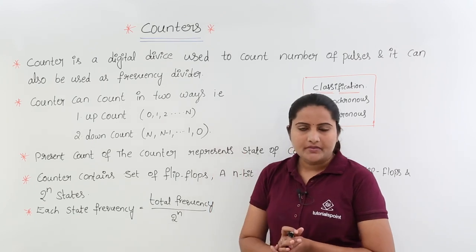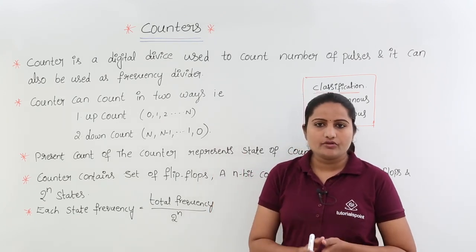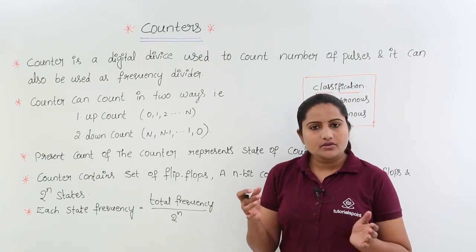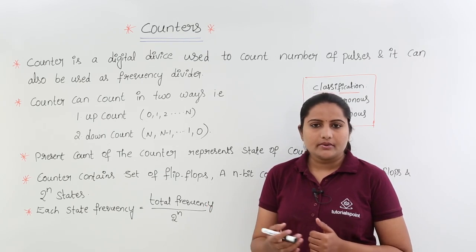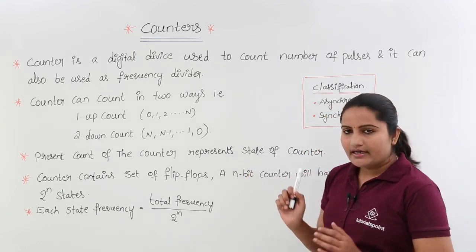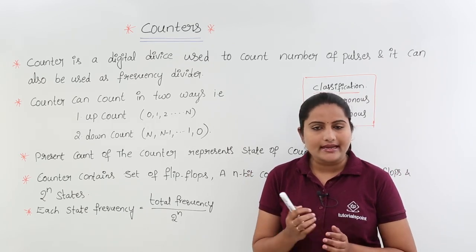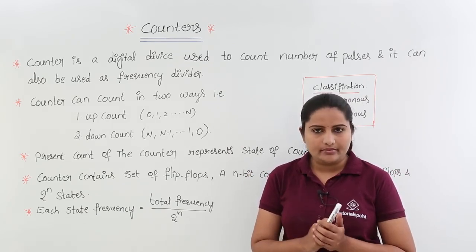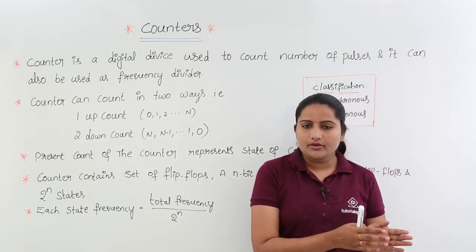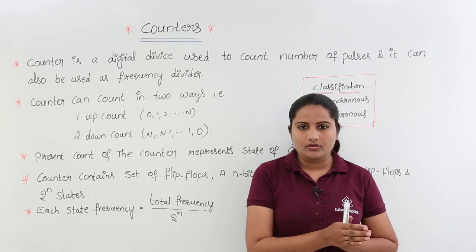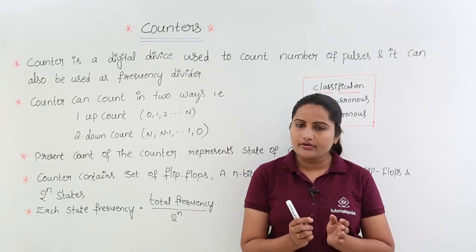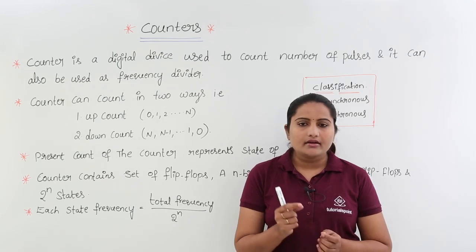Generally, a counter is the integration of flip flops, similar to a shift register as we saw in last classes. It is a bunch of flip flops — an interconnection of flip flops. A counter contains a set of flip flops. For example, if you want to assemble an n-bit counter, you require n flip flops. A 4-bit counter requires 4 flip flops, a 5-bit counter requires 5 flip flops.